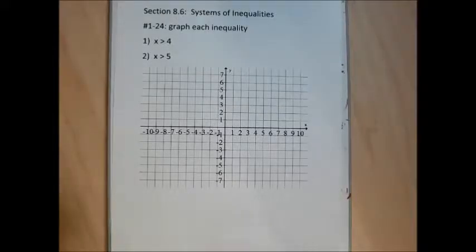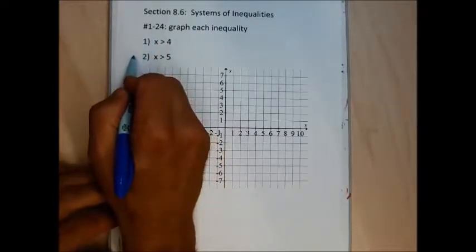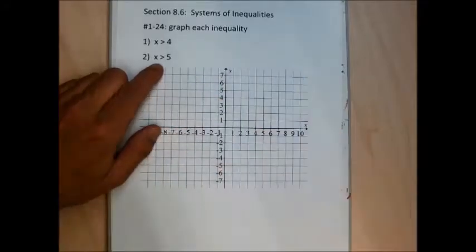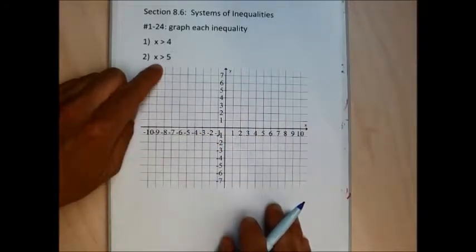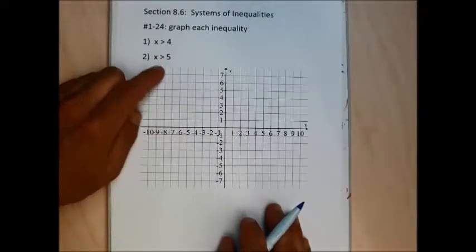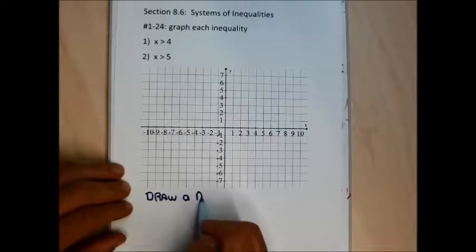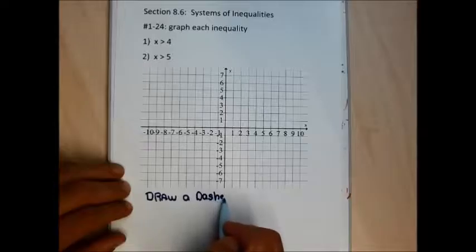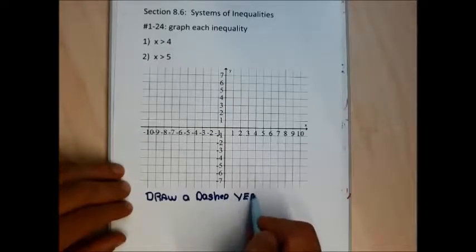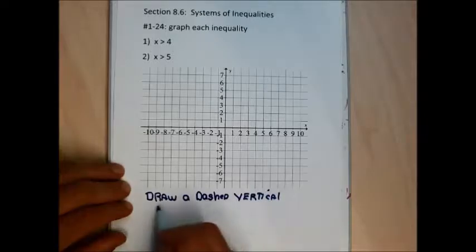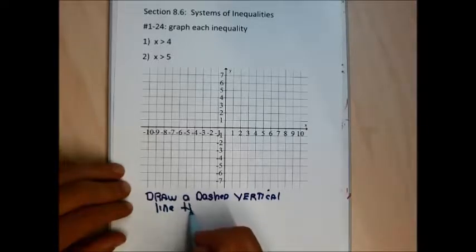Section 8.6 is a section on graphing inequalities, and I'm just going to jump into it. For problem 2, I want to graph and identify every point on a two-dimensional graph whose x-coordinate is greater than 5, but not equal to 5. I'm going to start off by making a dashed vertical line through 5 on the x-axis.